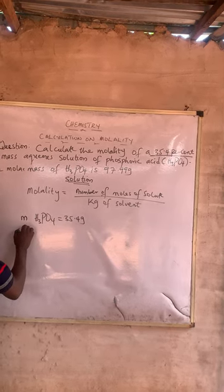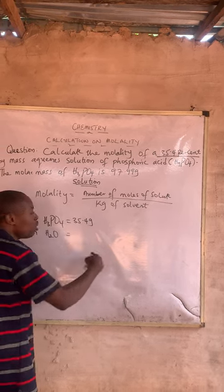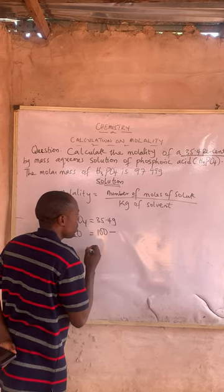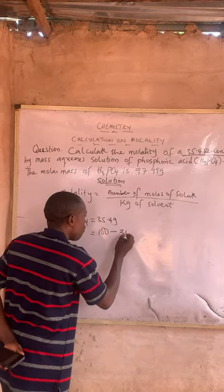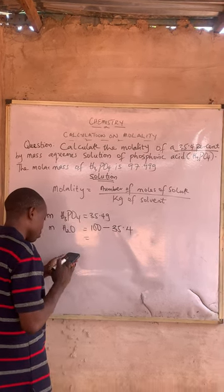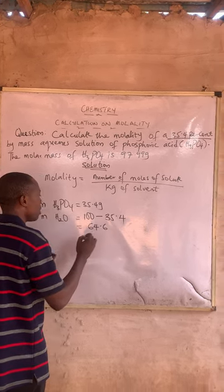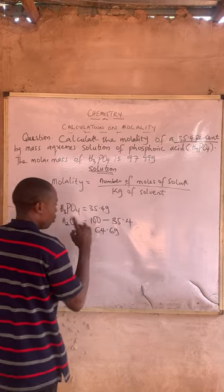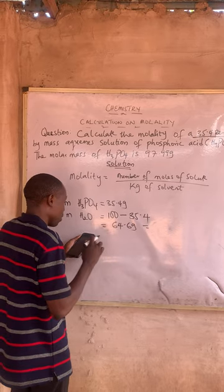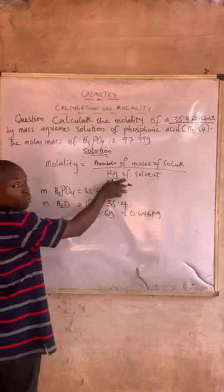That is to say, the mass of the water, which is the aqueous solution, will be 100 minus 35.4 — because the solution percent is 100 — which gives 64.6 grams. If I convert it to kilograms, it will be 0.646 kilograms. I've got the kilogram of the solvent.